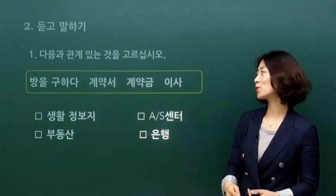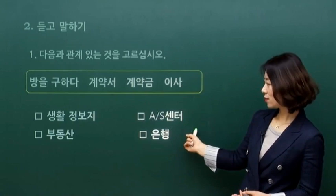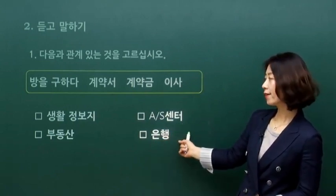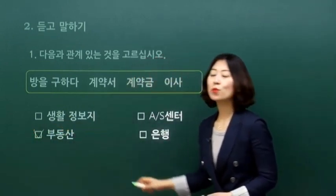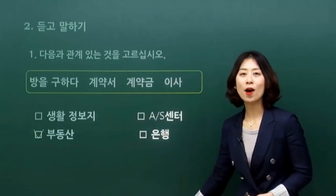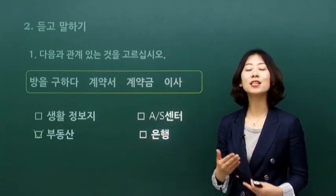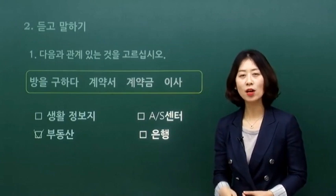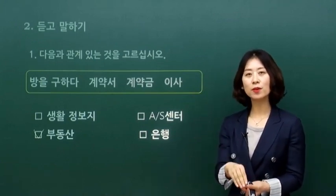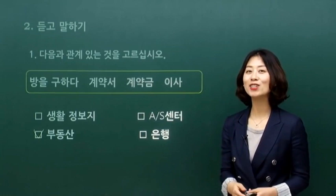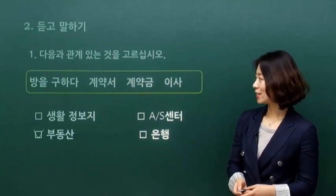관계 있는 것을 고르십시오라고 했는데, 보기로 생활정보지, AS센터, 부동산, 은행이 있네요. 생활정보지에서도 방을 구할 수 있지만, 계약서를 직접 작성하고 계약금을 내는 것은 부동산에서 이루어지는 일들인 것 같아요. 정답은 부동산입니다.